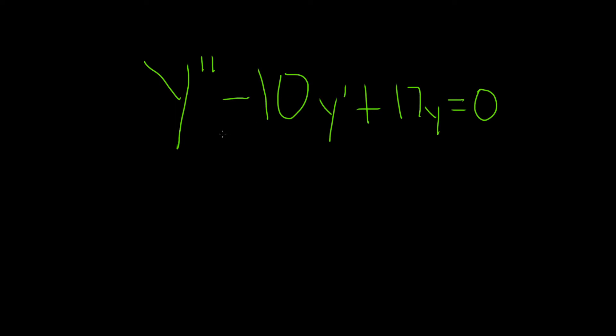And because it has constant coefficients, we can solve it using this method. The method is to first write down what's called the characteristic or auxiliary equation. So this is the second derivative, so we can write m squared. Basically, you just match it to the order of the derivative.